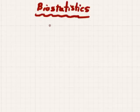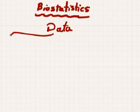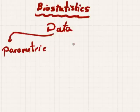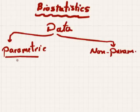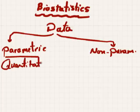Firstly, let's talk about what is the type of data. Data may be parametric data or non-parametric data. Parametric data is what we can calculate — it is quantitative data. Examples look like age.